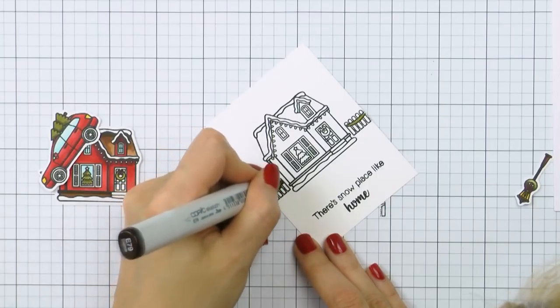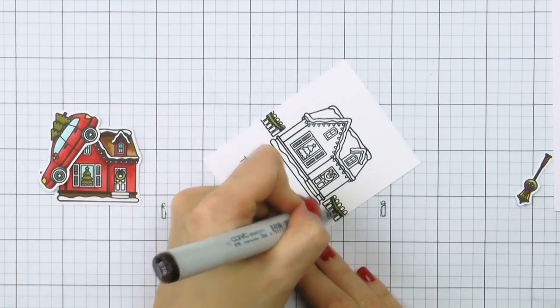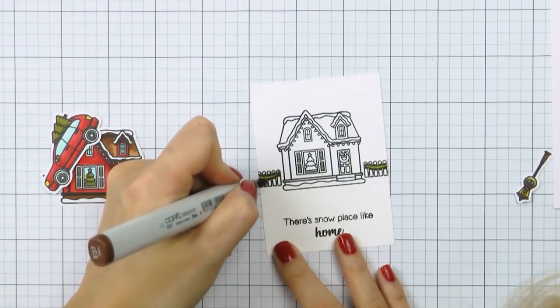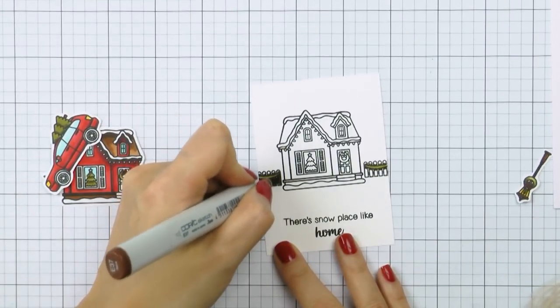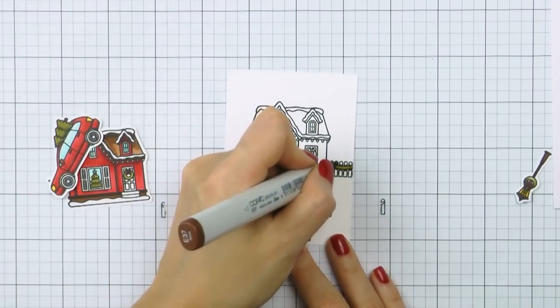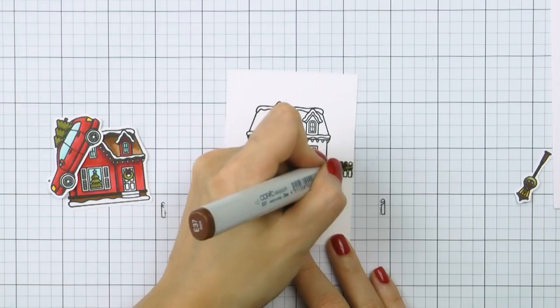I used the same marker colors to color the fence, browns and greens. I thought about leaving the fence white as I really do like that look, but I wasn't planning on coloring the background, so in order for my fence to not get lost on the card, I colored it brown.